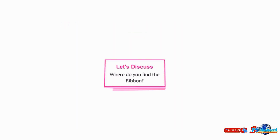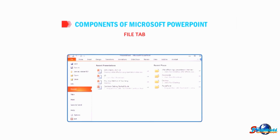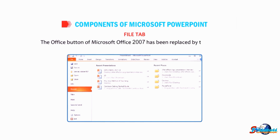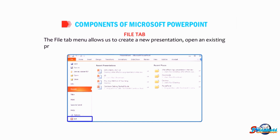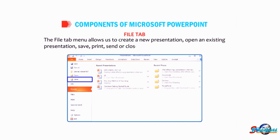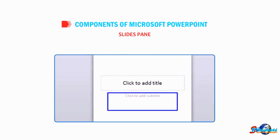Students, let's now have a discussion: where do you find the ribbon? The File tab — the Office button of Microsoft Office 2007 has been replaced by the File tab. The File tab menu allows us to create a new presentation, open an existing presentation, save, print, send, or close the presentation.